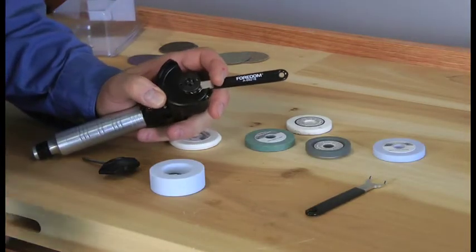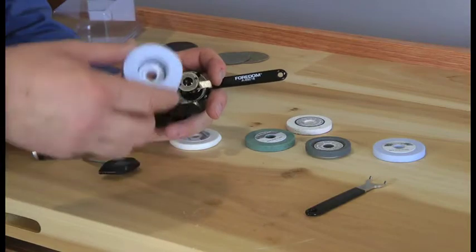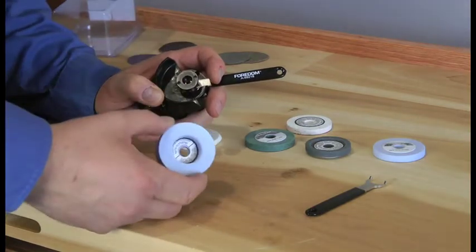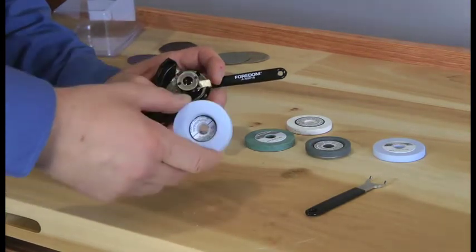All the items that go on the angle grinder all have a 3 1/8 inch arbor hole. So if you have any other accessories that take a 3 1/8 inch arbor hole, you can use these.